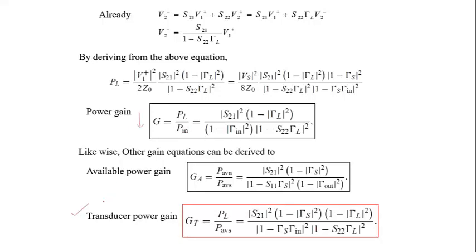And the very important, the transducer gain is available. This is the transducer gain. It looks like a very big formula because it is accommodating both source reflection coefficient as well as load reflection coefficients, as well as transistor's S-parameter is also coming. And the transistor amplifier reflection coefficient is also coming into the picture.